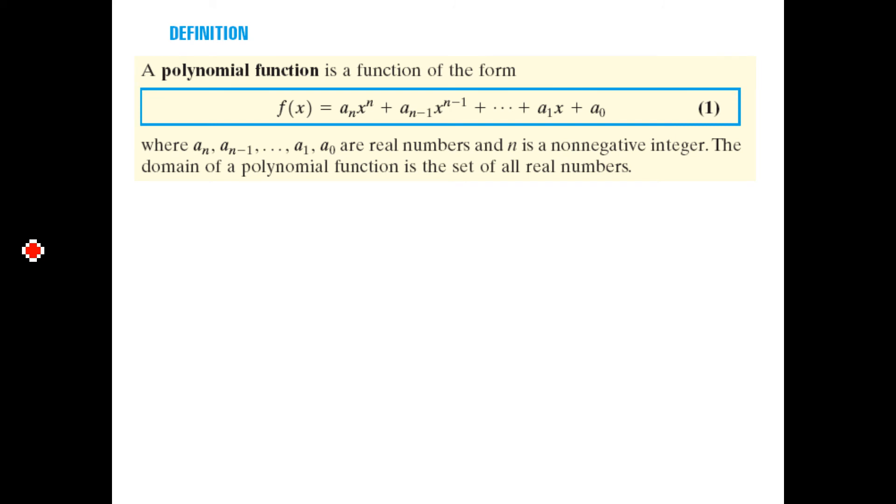So a polynomial function is of this form. What we're looking at here is a coefficient and then x to some power. A coefficient and then x to some power that's smaller by 1. So something like 5x cubed plus 2x squared minus 3x plus 2. Here's the constant at the end, that would be a polynomial. In our powers, no fractions, no negatives in the powers to be a polynomial.